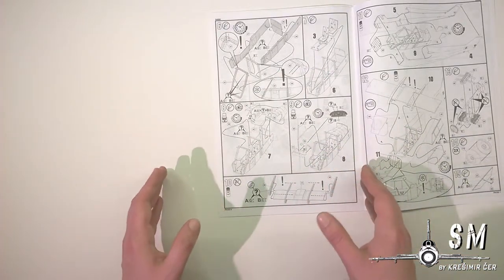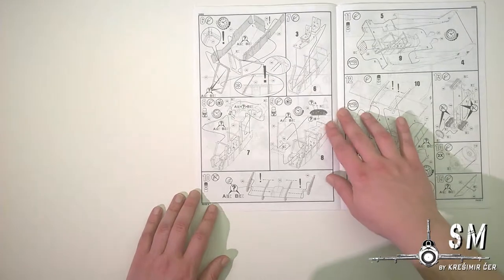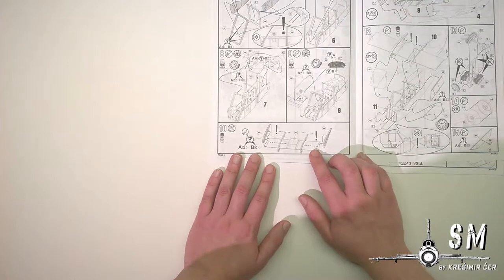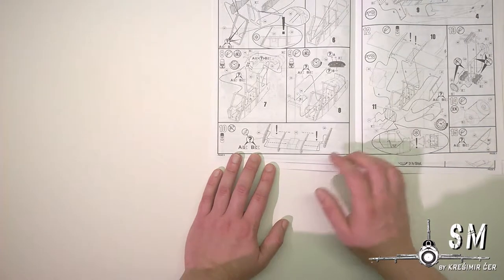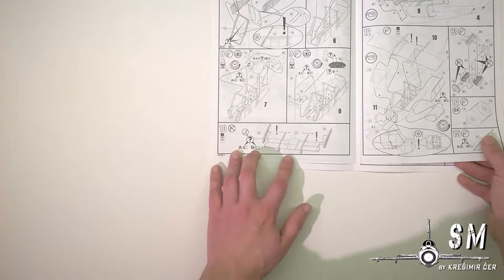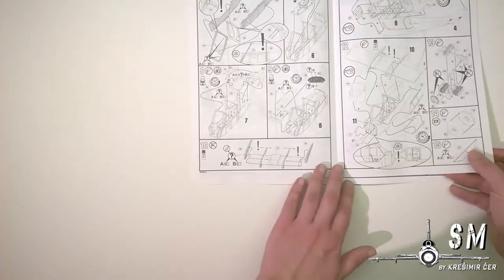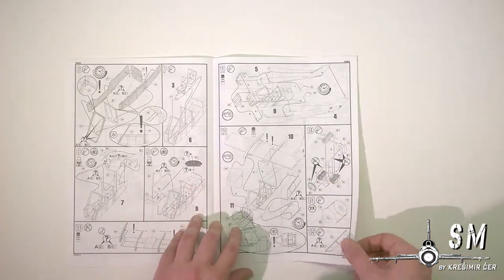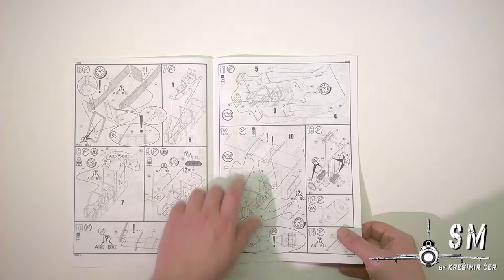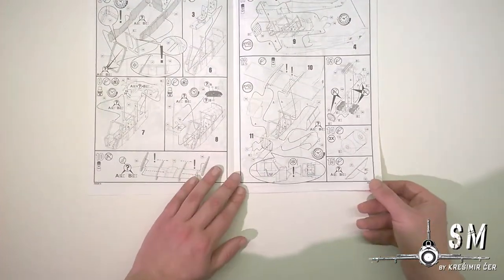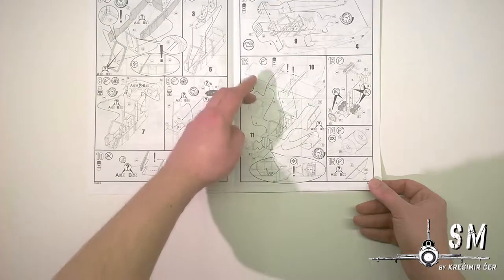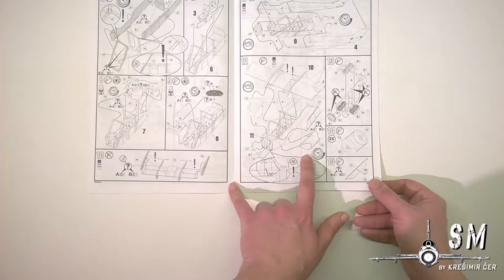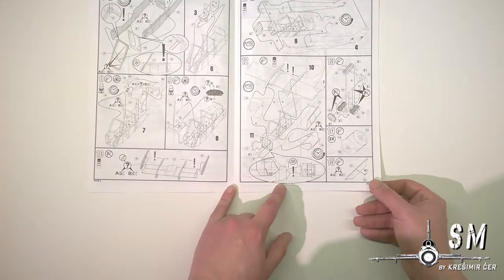Then we have our root of the wing with some ribs placed. After that we're assembling all the fuselage halves together with a firewall, putting our wing root assembled on the top and bottom of the fuselage.